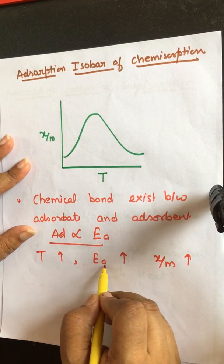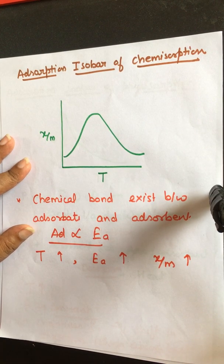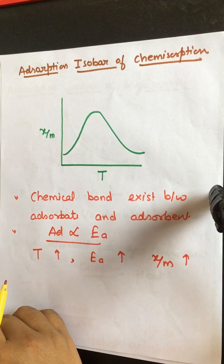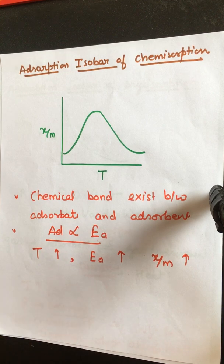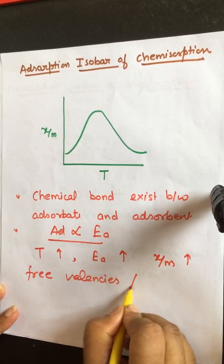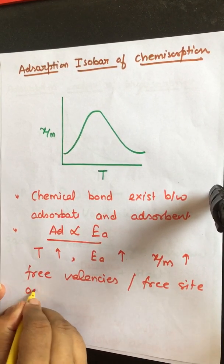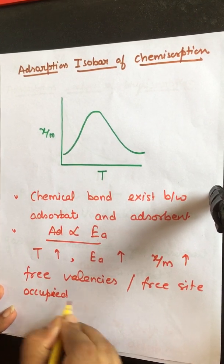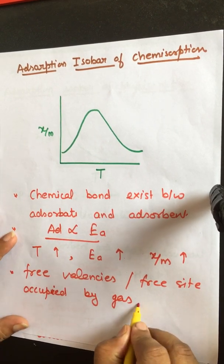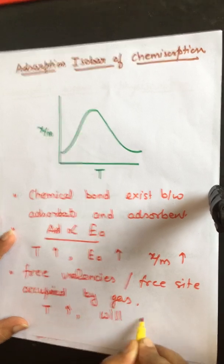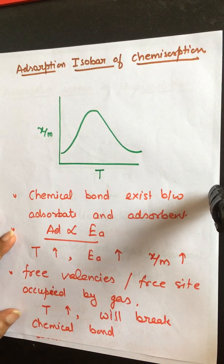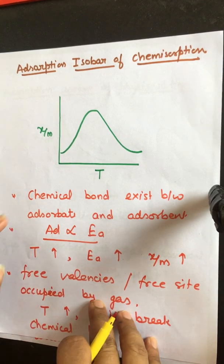As temperature increases, collisions between molecules increase, their activation energy increases, and chemical bonding between adsorbate and adsorbent begins to form, so extent of adsorption increases — but only up to a certain level. Once all free valencies and free sites are occupied by gas particles, further increase in temperature will break the chemical bond between adsorbate and adsorbent.